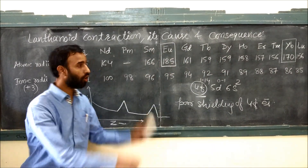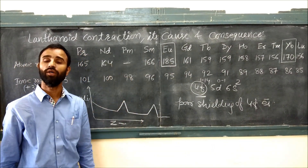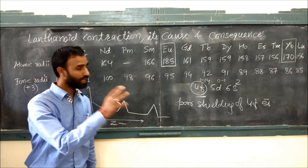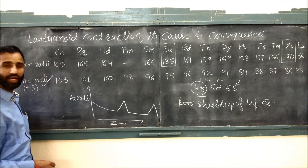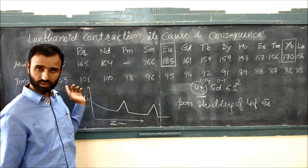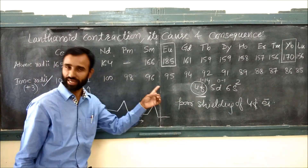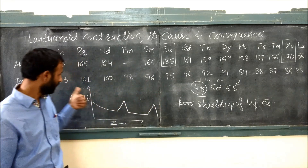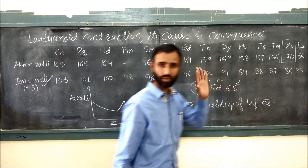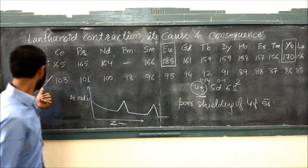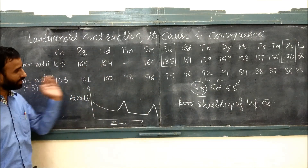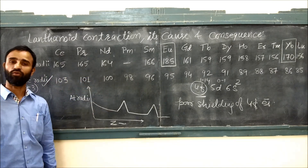Its cause is poor shielding of 4F electrons. Now let us talk about ionic radii. There is a continuous, regular decrease — though it is again steady, the decrease is continuous among lanthanoid ions in the +3 oxidation state, ionic radii decreases regularly.